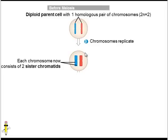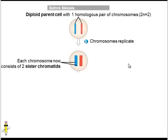So now we have our homologous pair of chromosomes, but each chromosome consists of two sister chromatids. This blue chromosome now consists of two blue sisters, and this red chromosome now consists of two red sisters. You might be tempted to say there are now four chromosomes, but you would be wrong — there are still only two chromosomes in this cell, but each chromosome consists of two chromatids, connected in the center. Now that we've doubled the chromosomes, we're ready for meiosis.